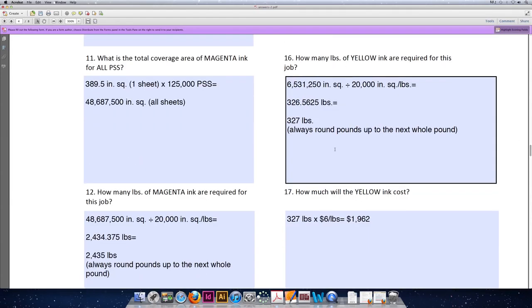From there, we can calculate the total number of pounds required for this job by dividing 6,531,250 square inches by 20,000 inches squared per pound. That means every one pound of yellow ink can cover 20,000 square inches. The total number of ink we need exactly is 326.5625 pounds.